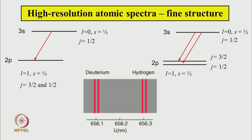These two states now have energy levels as shown on the right-hand side. Earlier, 3s and 2p were connected by only one transition, but because 2p can have j = 3/2 and j = 1/2 we now have two transitions. These two transitions are what are seen in the spectrum of deuterium and hydrogen — the fine structure — and this is easily explained by the introduction of the spin angular momentum s = 1/2.